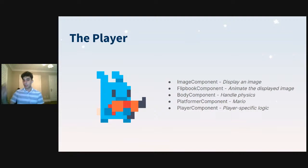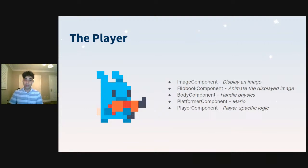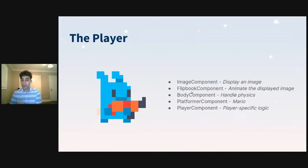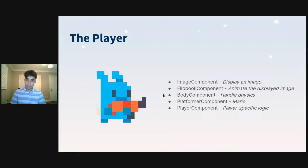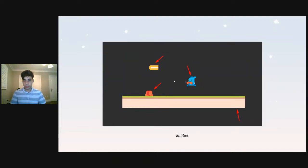The player is made up of a few different components: the image component displays the player's image, the flipbook component animates the player — so if I'm running you'll see a little running animation — and the body component does the physics: jumping, velocity, hitting things, gravity. The platformer component handles the Mario-style logic — going left and right and jumping. And then we have the player component for player-specific logic. Most of these components are completely unrelated to the player itself, which means we'll be reusing a lot of them for enemies and decorations in the game.